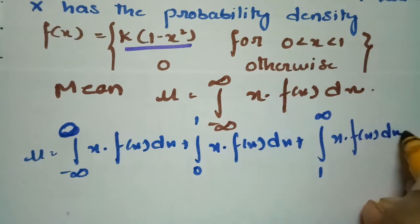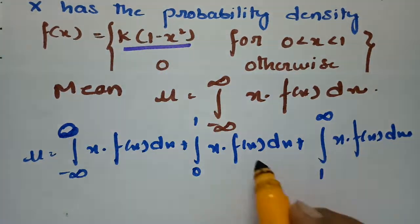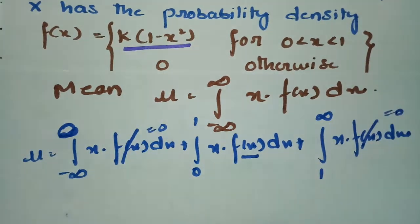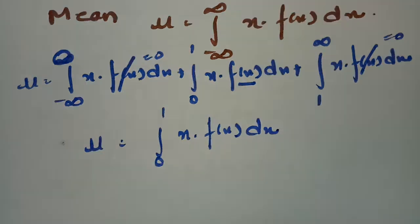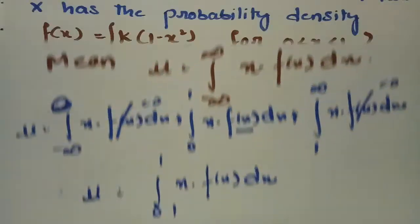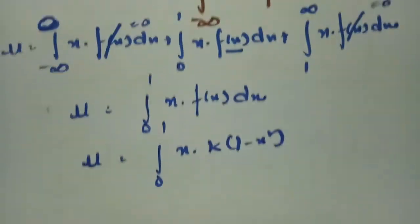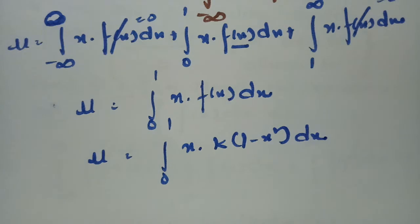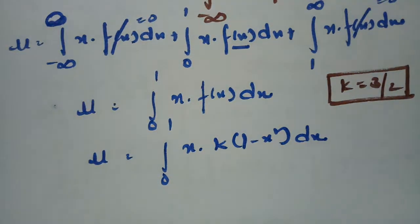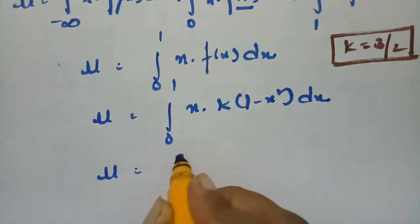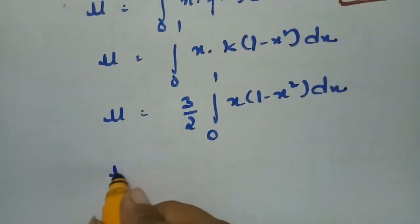Since f(x) equals k times (1 minus x squared) for x between 0 and 1, the mean becomes μ equals the integral from 0 to 1 of x times k times (1 minus x squared) dx. Substituting k = 3/2, this is 3/2 times the integral from 0 to 1 of (x minus x cubed) dx.